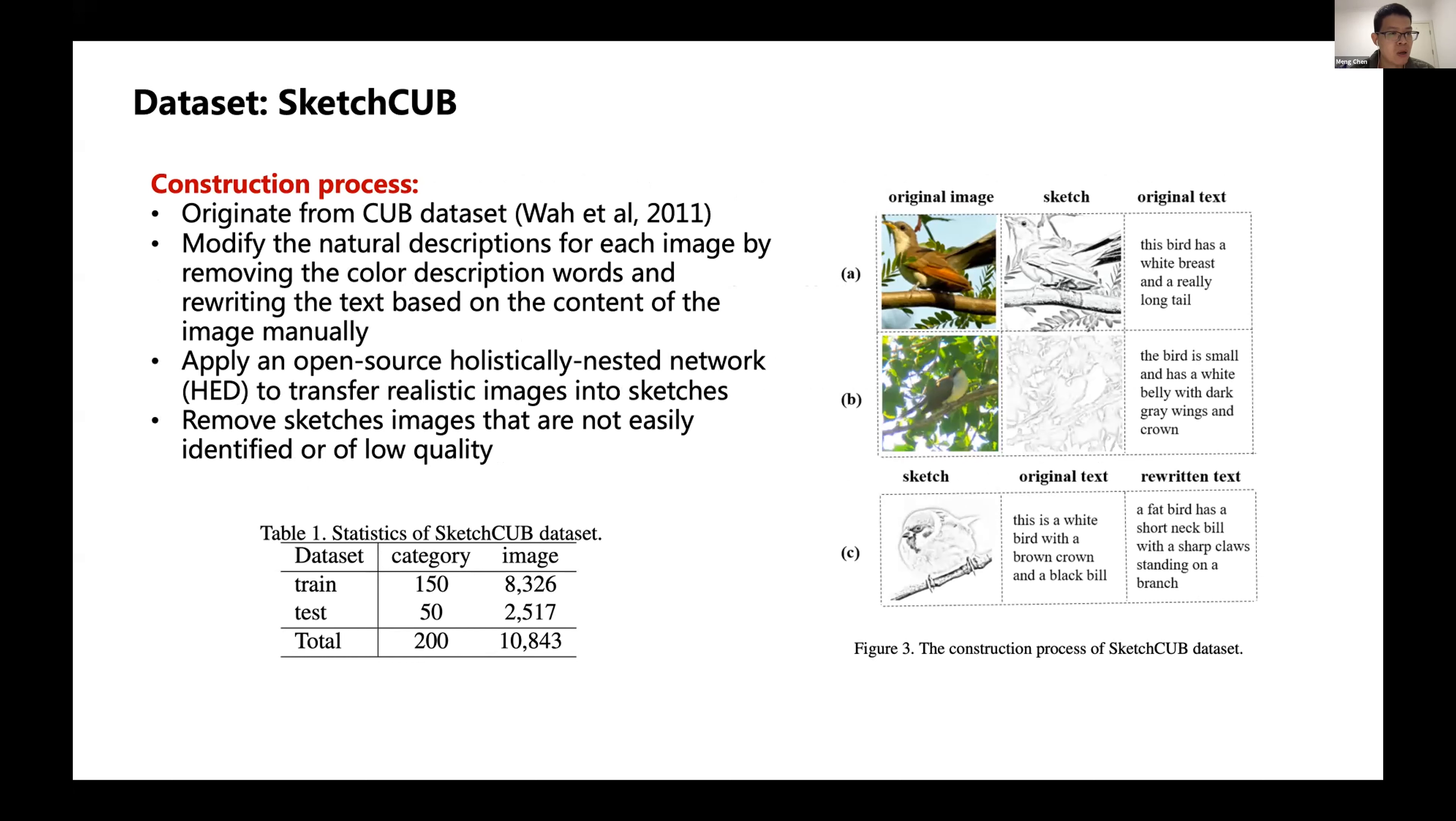How do we construct the dataset? The process is as follows. The data originated from the CUB dataset, which is a very popular text-to-image dataset. But the original descriptions have lots of words related to color, and that's not friendly for our task because sketches don't have any color—they only have black and white. So we need to modify them.